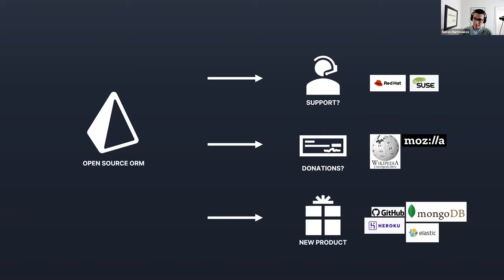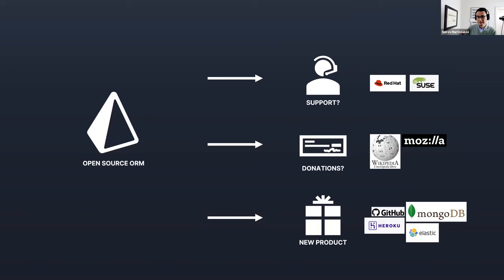What companies in our industry are doing — like GitHub, MongoDB, Heroku, and Elastic — is they don't charge for the core product but build another product on top of it. They take what we like to call a product-based approach to this problem.